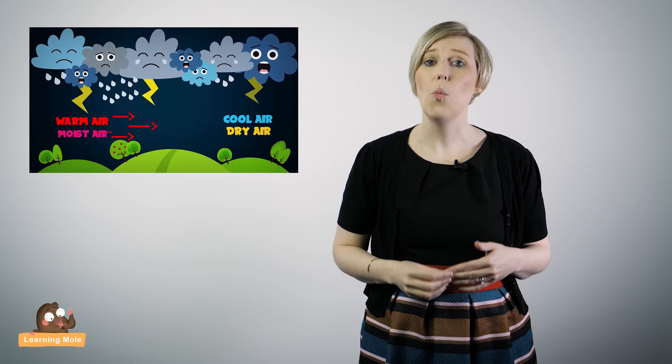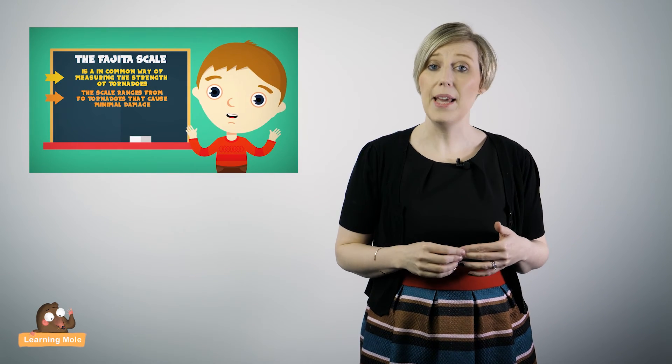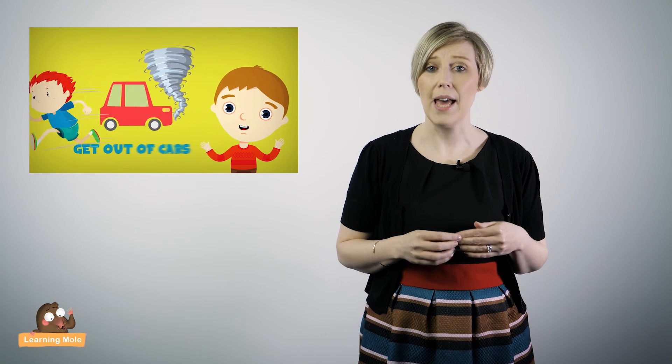Let's recap on what we've learned today about tornadoes. A tornado is a rapidly spinning tube of air that starts at the base of a thunderstorm and reaches all the way down to the Earth's surface. Tornadoes are normally formed from thunderstorms when warm, moist air and cool, dry air meet. A supercell thunderstorm is the largest, most severe type of thunderstorm. The Fujita scale is a common way of measuring tornado strength. An extreme tornado can travel over 100 miles. Tornadoes normally occur in an area nicknamed Tornado Alley. If you're in school during a tornado, crouch down on your knees and cover your head with your arms.